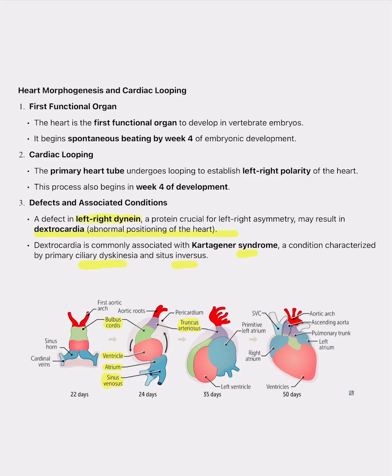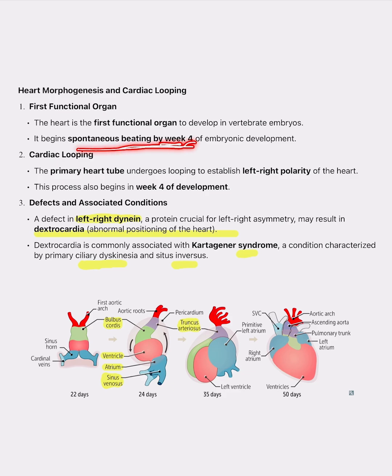Today let's discuss heart morphogenesis and cardiac looping. The heart is the first functional organ to develop in vertebrate embryos. It starts beating spontaneously by the fourth week of development and plays a critical role in establishing circulation to support the growing embryo.